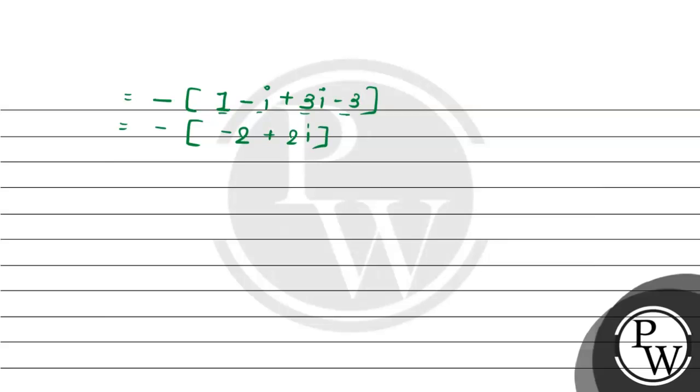So we will get minus times minus 2 plus 2i, which gives us 2 minus 2i. That is our solution. I hope the solution helped you. Thank you.